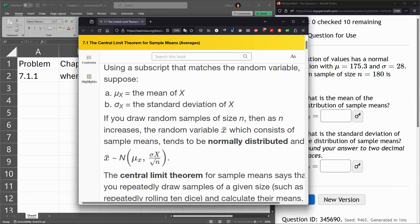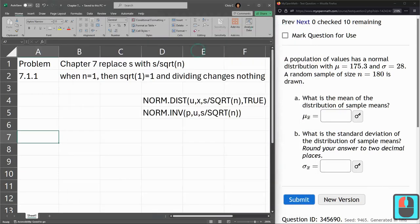And we're going to use the same formula as we used in Chapter 6. The only difference is we're going to take that standard deviation and divide it by square root of N. And what that looks like, we're going to replace S with S divided by square root of N.